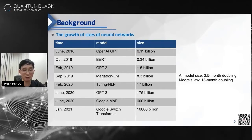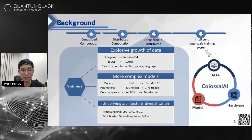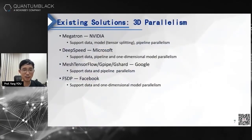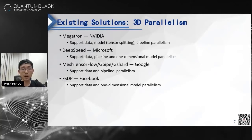So how can we deal with this in the future? That's why we propose Colossal AI — a new system to handle huge datasets and more complex models, and more complicated computational architectures like CPU, GPU, or TPU. There are existing solutions in industry — NVIDIA, Microsoft DeepSpeed, Google's Mesh TensorFlow, and Facebook FSDP — but they are not enough yet. The key idea they use is 3D parallelism: data parallelism, tensor parallelism, and pipeline parallelism. But they are not very efficient for processing huge models.